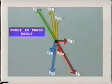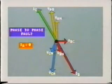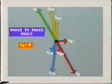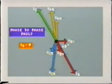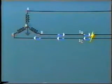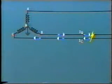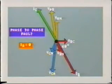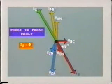Now let's look at the line currents. As we are considering zero load, IA is zero. The current traveling through line B is feeding the fault, and this will lag by approximately 60 degrees on voltage VBC. Once IB passes through the short circuit, it returns along line C. So current IC can be shown at the same magnitude, but 180 degrees apart from IB.